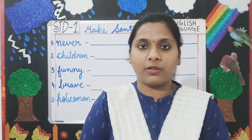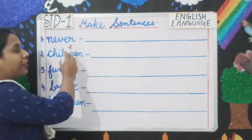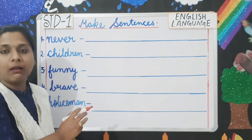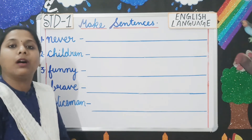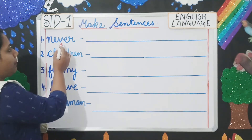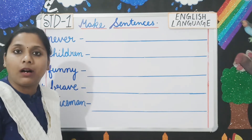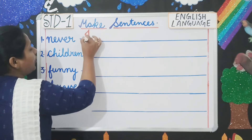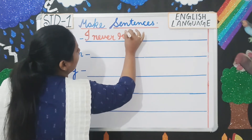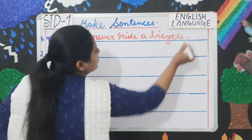Moving on to 'make sentences.' Words are given and you have to frame sentences. Remember: your sentence begins with a capital letter and ends with a full stop. Number one — 'Never': you can write 'I never ride a bicycle.' Your 'I' will be capital, and it ends with a full stop.